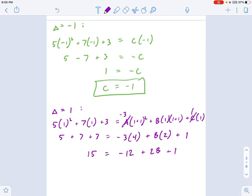Keep working this down. We get 15 equals negative 12 plus 2B plus 1. And this becomes negative 11. 26 equals 2B. So that means 13 equals B. So the technique here, just to review this.